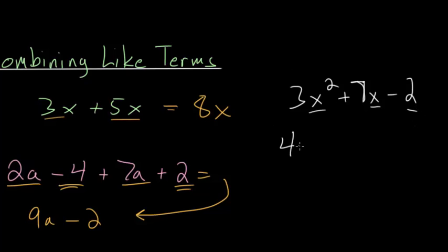But if you had something like 4x squared minus 2x squared plus 7x minus 5x now these things are like terms. Since you have 4x squareds and you're taking away 2x squared. So this would be 2x squared.